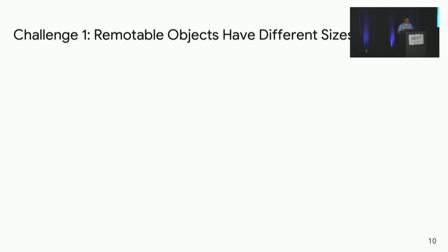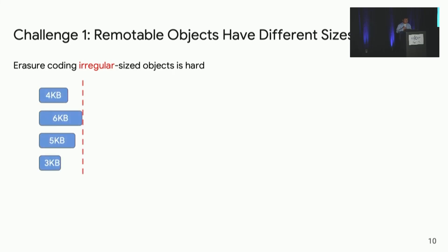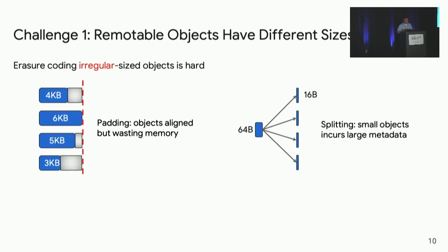In a far-memory system like AIFM, the system abstracts application data into removable objects of different sizes depending on what the application needs. However, erasure coding on irregular-sized objects is hard because erasure coding normally requires equal-sized chunks to generate parity chunks. You may do padding to align these objects, but this wastes memory. You may split each object into smaller equal chunks, but for small objects this incurs large metadata overhead to store each chunk's location.